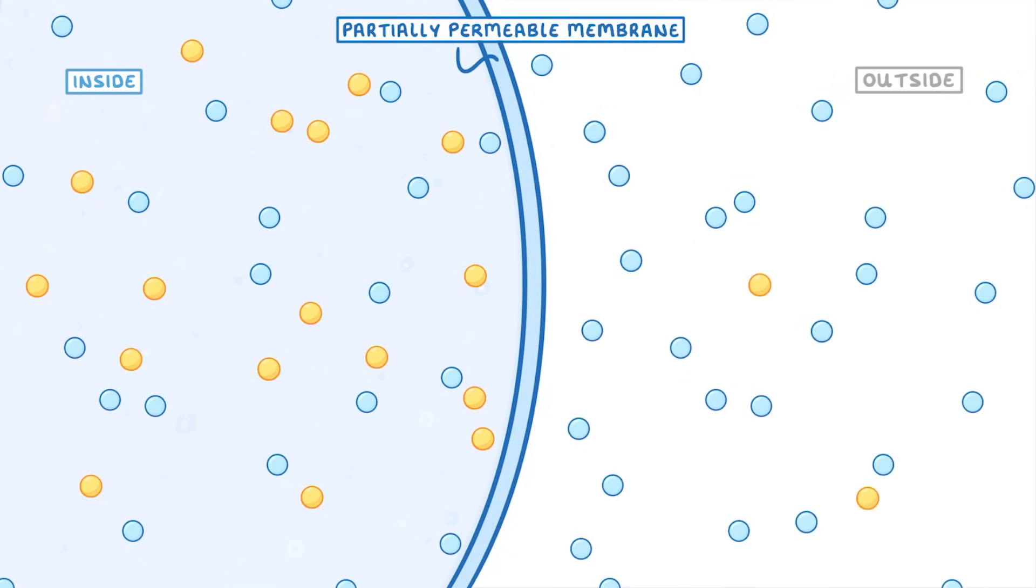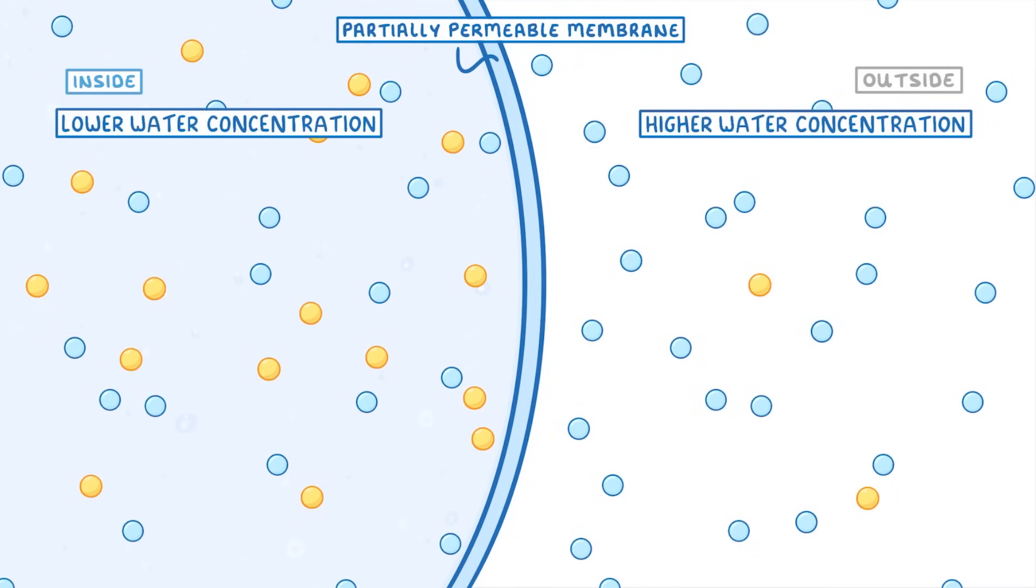In this case, the outside of the cell has the higher water concentration, because there aren't many solutes, and so the inside of the cell has the lower water concentration. This difference in concentration means that water particles will diffuse from the outside of the cell, down the concentration gradient, into the cell. And it's this process of moving from a region of higher water concentration, to a region of lower water concentration, that we call osmosis.